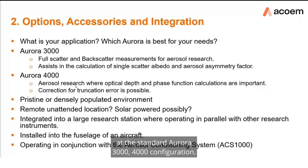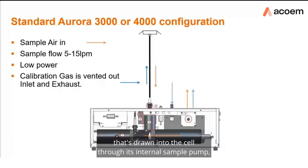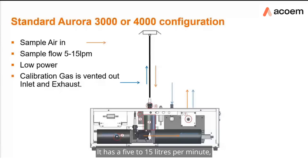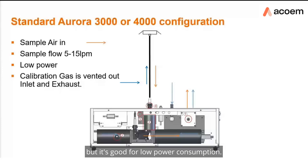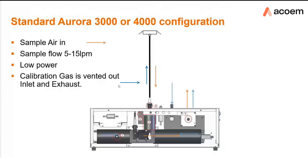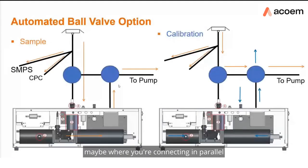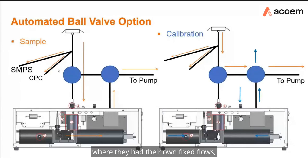The standard Aurora 3000 and 4000 configuration is a standalone setup where the sample inlet is drawn into the cell through an internal sample pump — a low-power blower motor running at 5 to 15 liters per minute. However, that flow is not regulated or controlled, so restrictions in the inlet can affect flow. Calibration gas is vented out both the inlet and the exhaust. This is the simplest configuration, good for use in parallel with other instruments that have their own fixed flows.